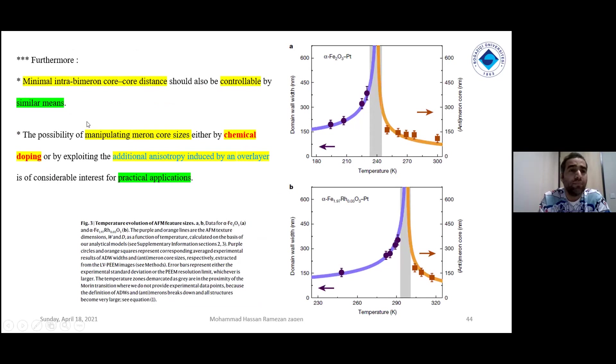Good result is that it is possible to change the room temperature size of meron and anti-meron cores by reducing the exchange stiffness or increasing anisotropy. Additionally, they say that a minimal inter-meron core-to-core distance can be controllable. They can manipulate meron core sizes by chemical doping or additional anisotropy induced by an overlayer for practical applications.